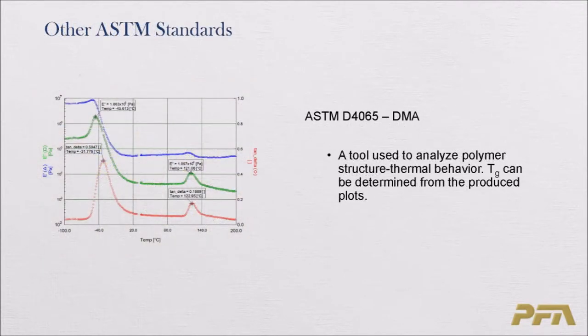Moving into other ASTM standards: first is Dynamic Mechanical Thermal Analysis (DMTA), a tool used to analyze polymer thermal behavior from which the Tg can be determined. It produces three curves: E-prime (storage modulus), E-double-prime (loss modulus), and tan delta (the ratio of loss modulus to storage modulus). The peaks in these curves indicate glass transition temperatures, and it is possible to have multiple Tg values.